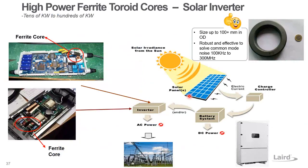This is another example for a very high-power solar inverter. The solar panel collects power from the sun, stores it in a DC battery, and then converts DC to AC for the AC mains. Laird offers very large ferrite cores for this inverter application, for the cable harness, to suppress low-frequency noise from about 100 kHz to 300 MHz. Core sizes can be as large as 100 mm or even bigger.